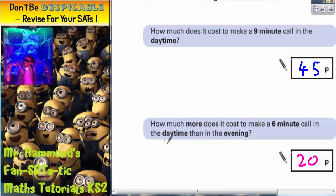So in the daytime it was 30 pence, in the evening it was 10 pence, and 30 pence is 20 pence more. So the answer is 20 pence.